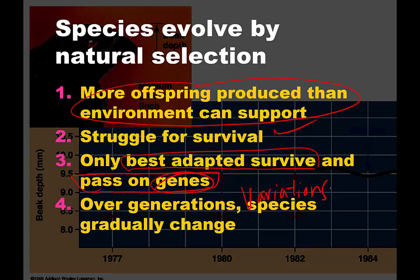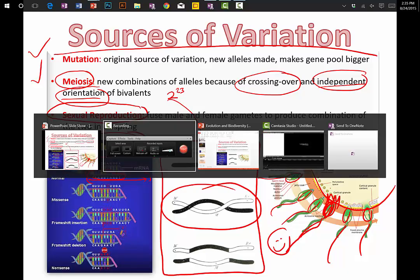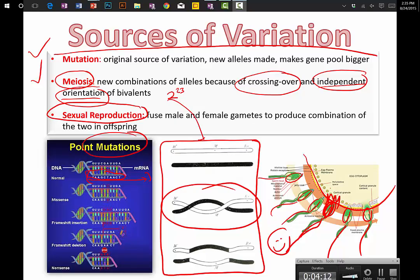So for evolution to work through natural selection, you need to have variation. That variation will create certain genes that allow for better fitness according to a given environment. Just a really short video on sources of variation.